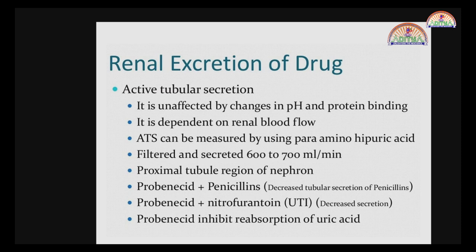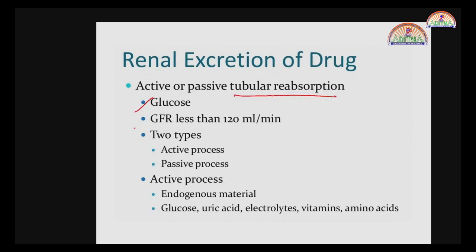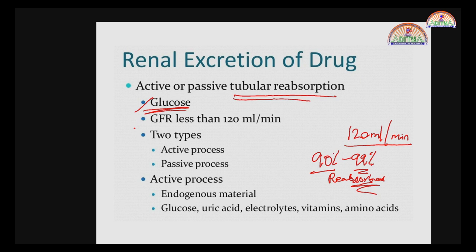The next principal step in renal excretion is tubular reabsorption. Substances like glucose and important electrolytes are reabsorbed by this route — called active or passive tubular reabsorption. Reabsorption is essential because the GFR is 120 mL per minute, representing a huge volume. Our body is designed so that 90 to 99 percent of the glomerular filtration volume is reabsorbed. Vital compounds like glucose are reabsorbed, and the passive process does not require energy whereas the active process does.